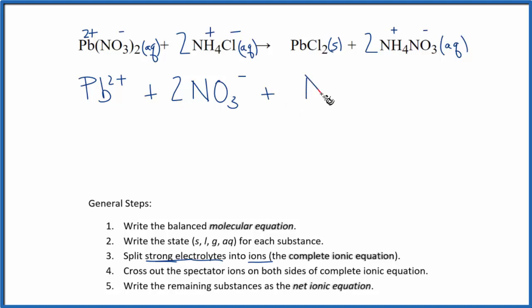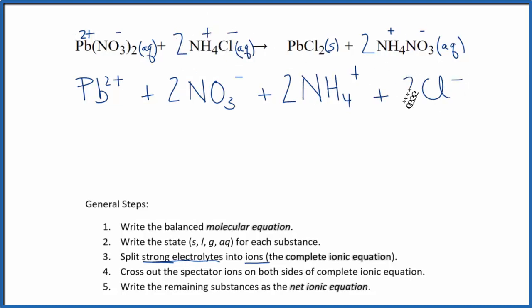Plus NH4+, the ammonium ion. The 2 here means we have two of these as well, so we put a 2 in front. And chloride, Cl minus. The 2 applies to everything, so we'll put a 2 here.